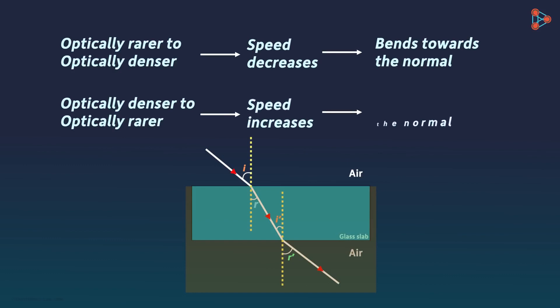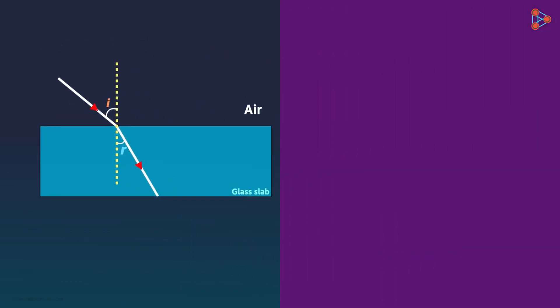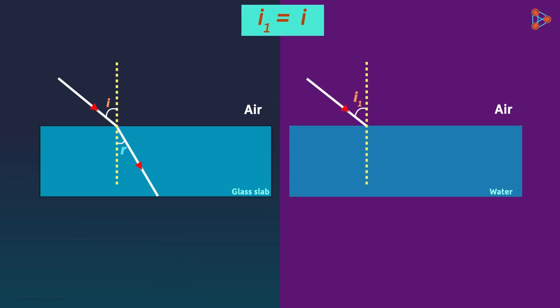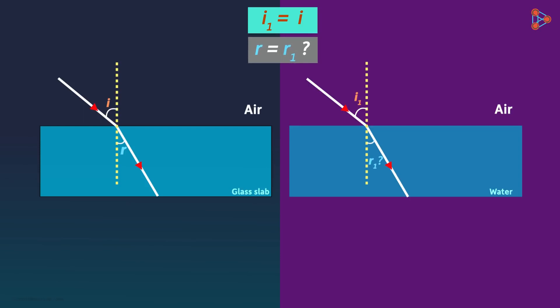To summarize: dense medium has more density and less speed; rare medium has less density and more speed. Whenever light travels from rare to dense medium, speed decreases and it bends towards the normal. When light travels from dense to rare medium, speed increases and it bends away from the normal.